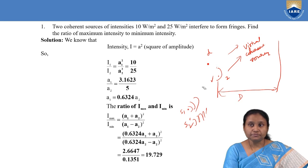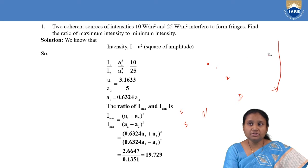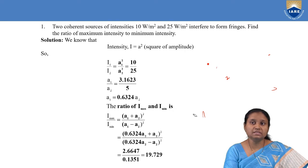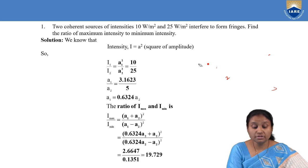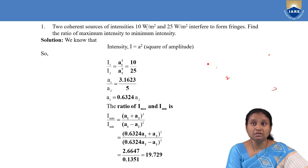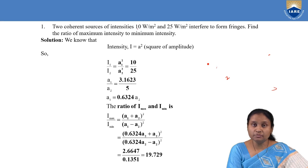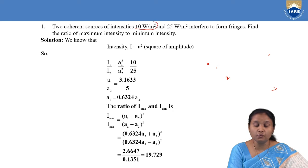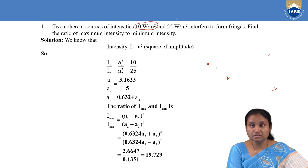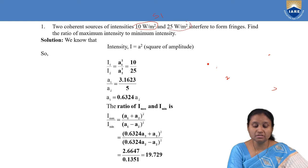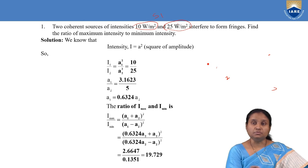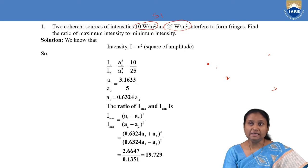Coming to the first numerical, here we are given two coherent sources S1 and S2. From the first source S1, the intensity of light is 10 watt per meter square, and from another source S2, the intensity is 25 watt per meter square. These two intensities are undergoing interference and we are able to get fringes on the screen. We need to find the ratio of maximum intensity to minimum intensity.